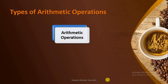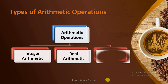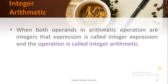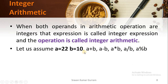In arithmetic operations, we have three types: integer arithmetic operations, real arithmetic operations and mixed mode arithmetic operations. When both operands in an arithmetic operation are integers, that type of expression is called an integer expression and that operation is called an integer arithmetic operation.